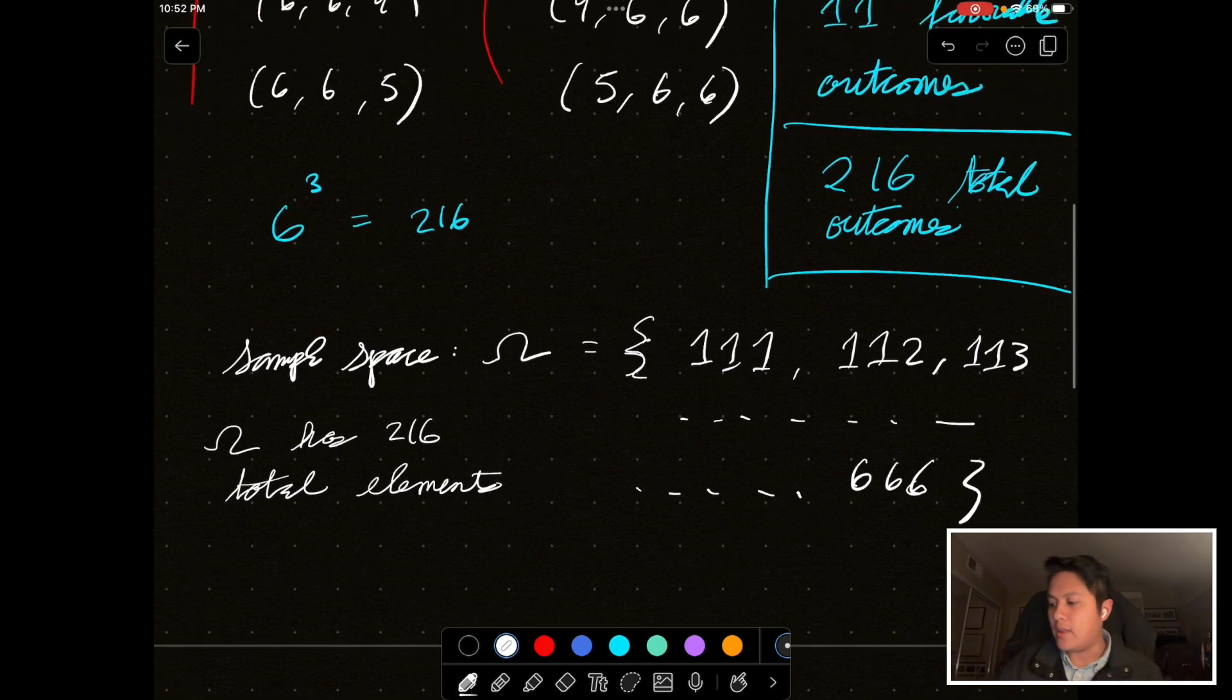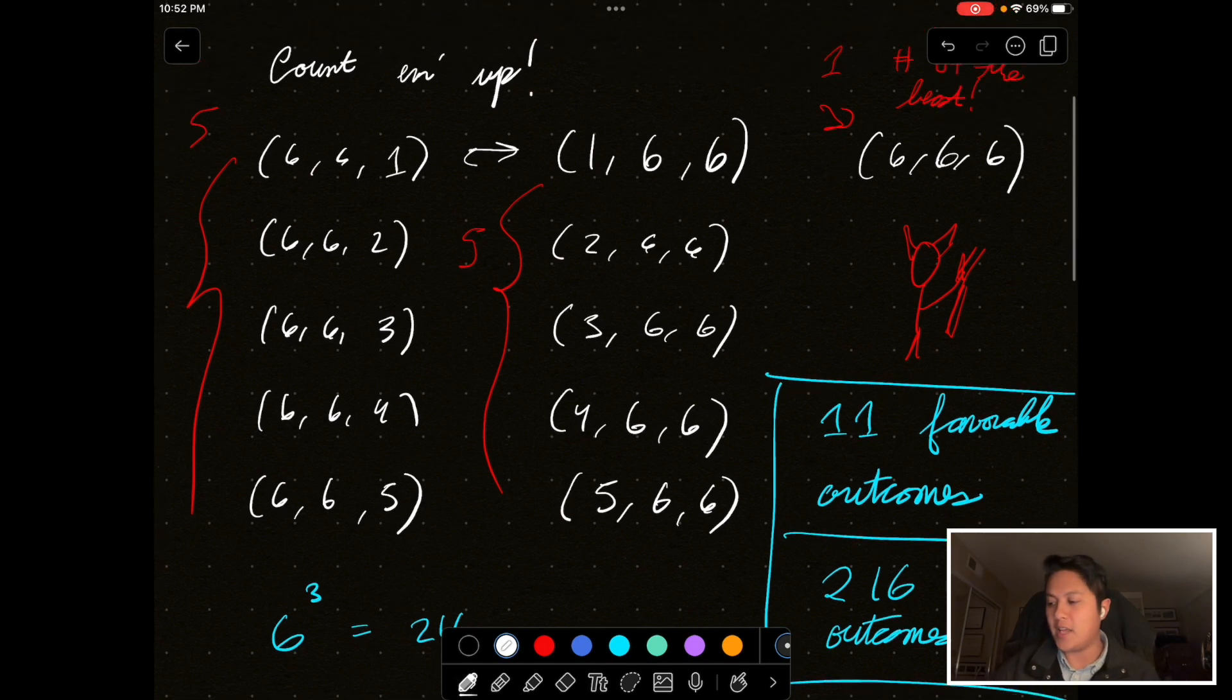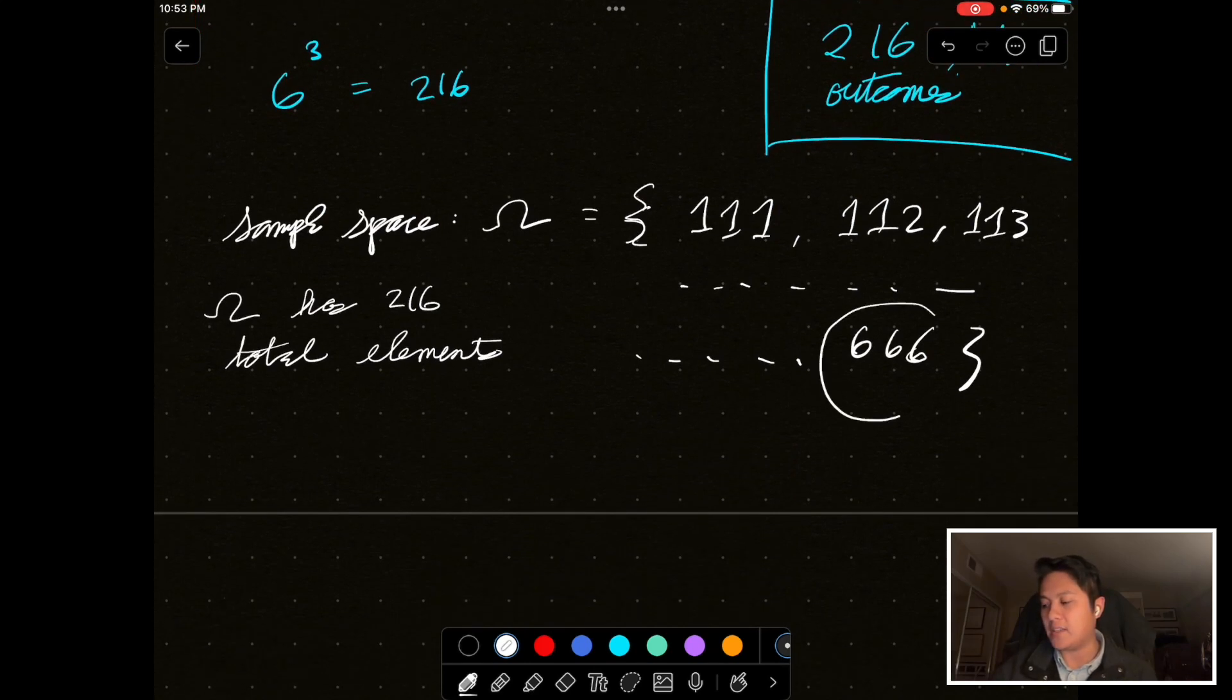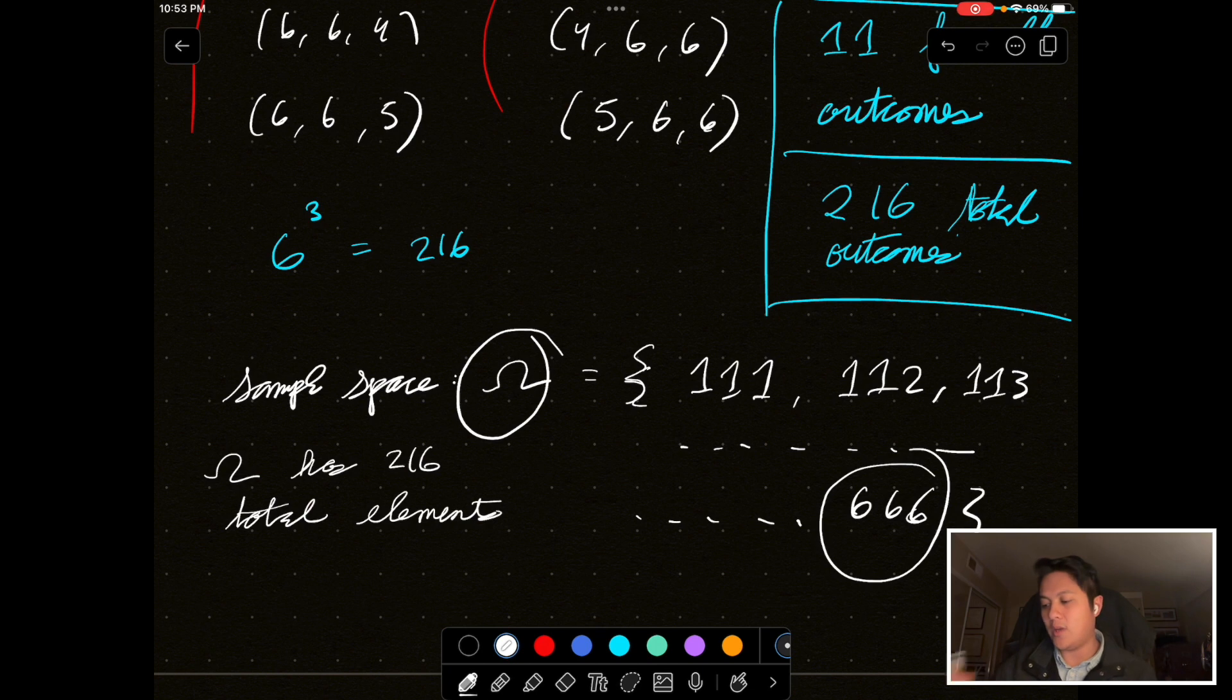And, remember that the outcomes that we cared about were these 11. These 11 outcomes, where we have two consecutive sixes, are the ones we cared about the most. And, they're in this set, right? This was one of them. So, when we're talking about probability, we can think of it as the number of favorable outcomes over the total number of outcomes. So, we're looking for the subset of elements within omega that satisfy the condition we seek.